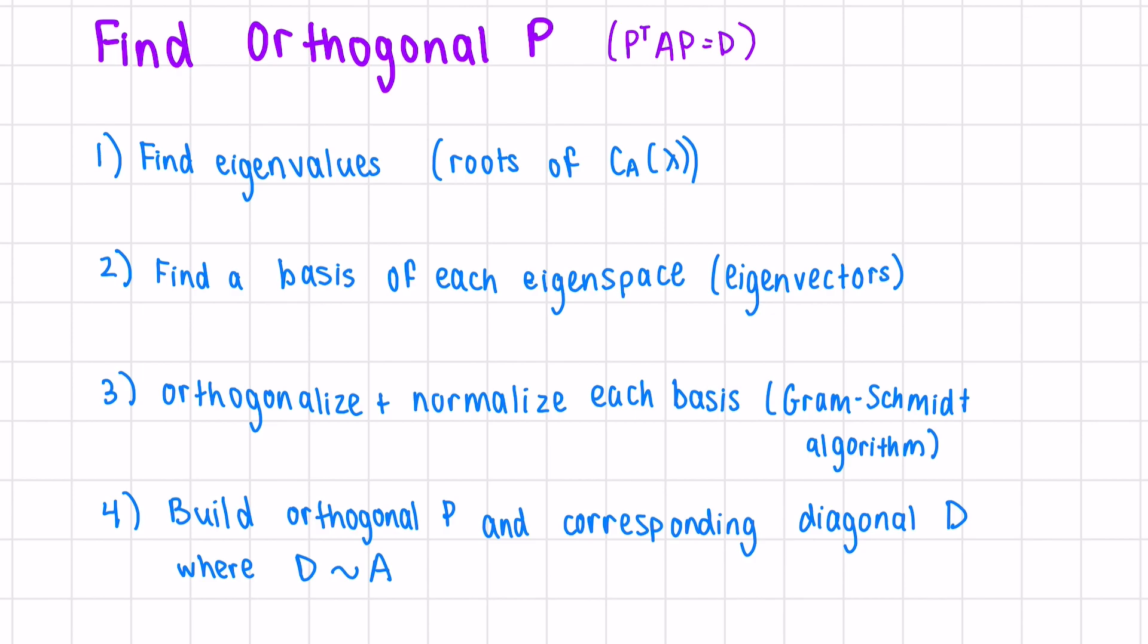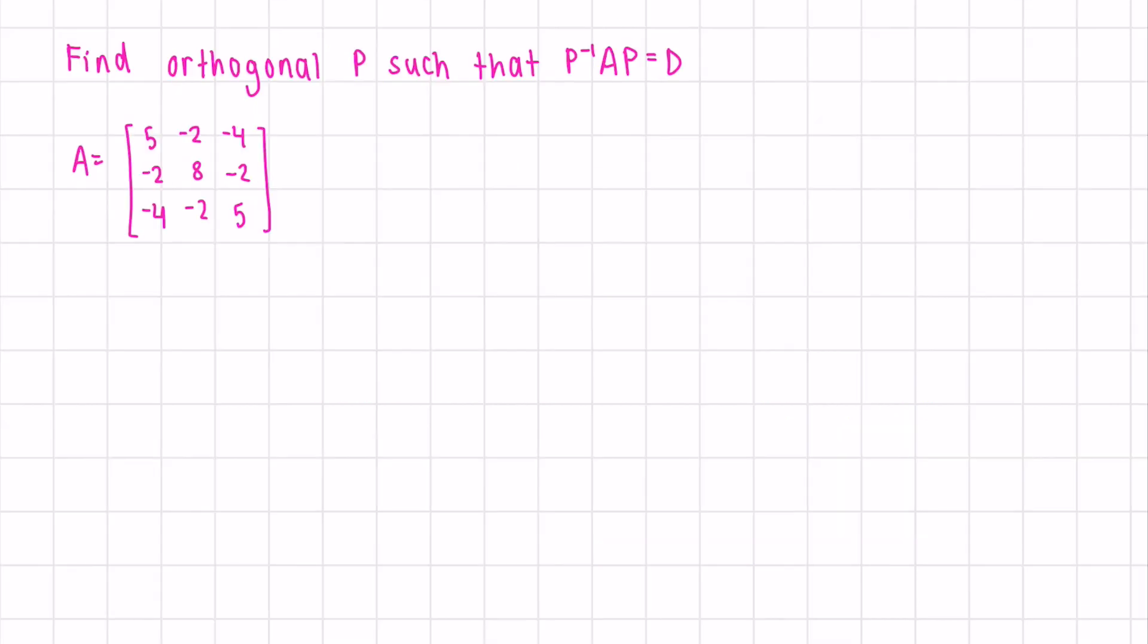Now let's try these steps. Let's find an orthogonal P that diagonalizes this matrix A. To begin, we need the eigenvalues. We have no zeros in our matrix, so to generate at least one zero, we can do row one minus row three. Next, we can factor out lambda minus nine from the first row. And now, why don't we just expand along the first row?